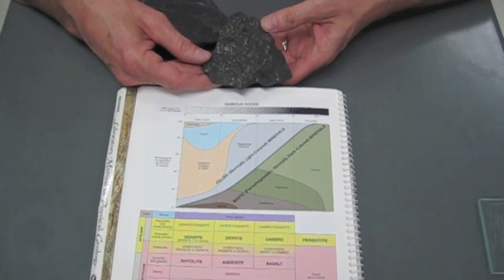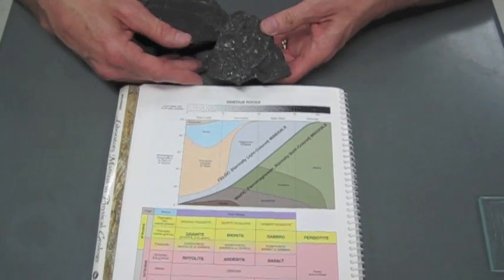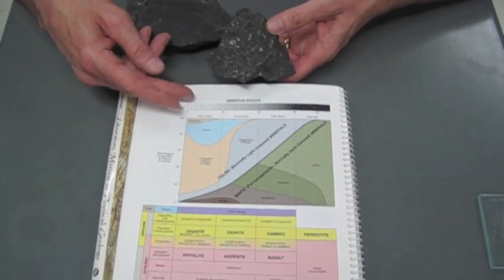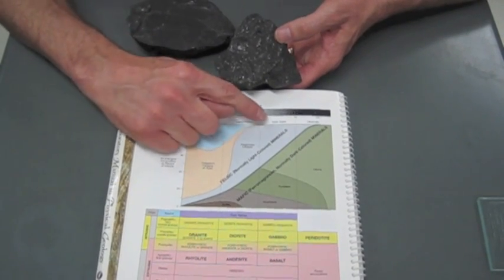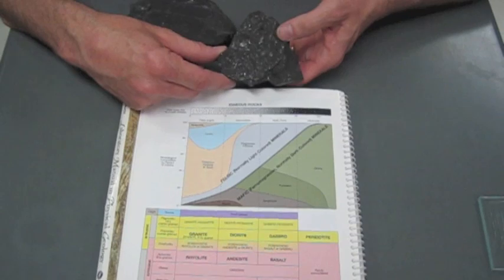And then there was some erosion to bring it up towards the surface. If I look at the color index, it certainly isn't light-colored or even gray, sort of an intermediate color. It's pretty dark. So it's a mafic rock. It's dark colored.